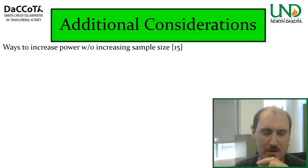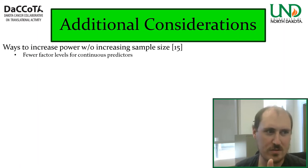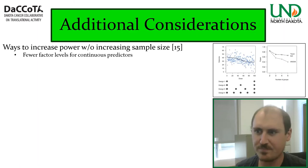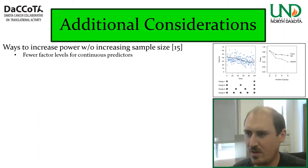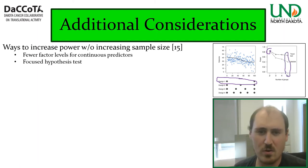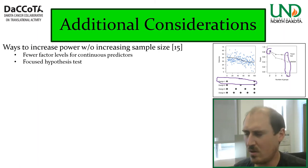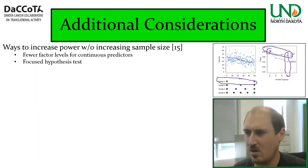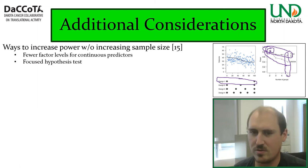Four ways to increase statistical power. First: fewer factor levels for continuous predictors. If you have an outcome and dose as a continuous variable split into discrete levels, using fewer levels will give you stronger power than more levels. Similarly, a focused hypothesis test gives better results. For instance, a trend test — asking 'is there a trend?' — is stronger than a generic ANOVA asking 'is at least one group different?', especially as the number of groups increases.